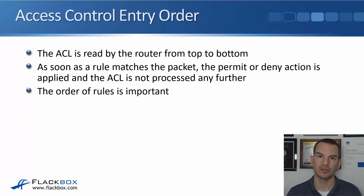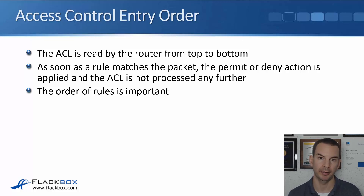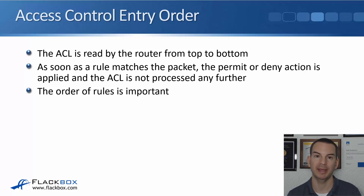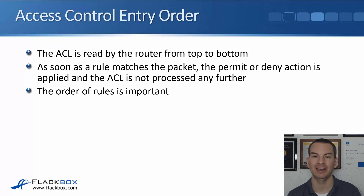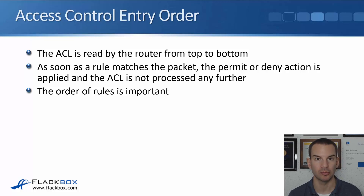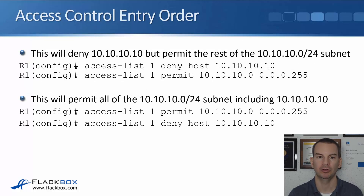Super important: the ACL is read by the router from top to bottom. As soon as a rule matches a packet, the permit or deny action is applied, and the ACL is not processed any further for that packet. This means the order of rules is important.